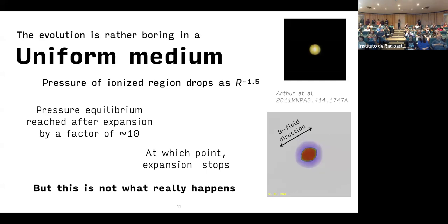In a uniform medium, this evolution is a bit boring. The pressure of ionized region drops as R to the minus 1.5. Pressure equilibrium reached after expansion by a factor of about 10. At which point, expansion stops. But this is not what really happens.